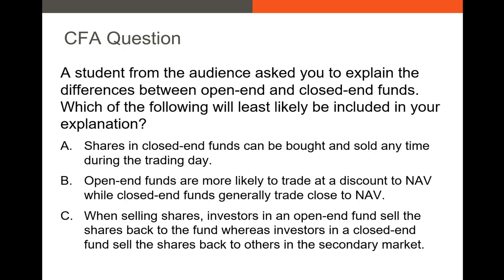Let's take a look at a CFA question. A student has asked you to explain the difference between open-end and closed-end funds. Which of the following will be least likely included in your explanation? A: Shares in closed-end funds can be bought and sold at any time during the day. B: Open-end funds are more likely to trade at a discount to NAV while closed-end funds generally trade close to NAV. C: When selling shares, investors in an open-end fund sell shares back to the fund whereas investors in a closed-end fund sell shares to others on the secondary market.